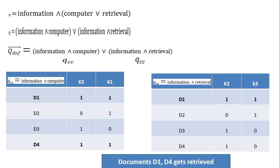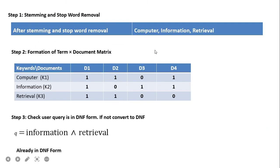The next query is '(information AND computer) OR retrieval.' This query is not in DNF form, so we apply the formulas and convert it to DNF. This gives two qcc parts: (information AND computer) and (information AND retrieval), corresponding to (k2 AND k1) and (k2 AND k3). Checking the documents, d1 and d4 are qualified for the first qcc, and d1 is qualified for the second. Therefore, documents d1 and d4 are retrieved.